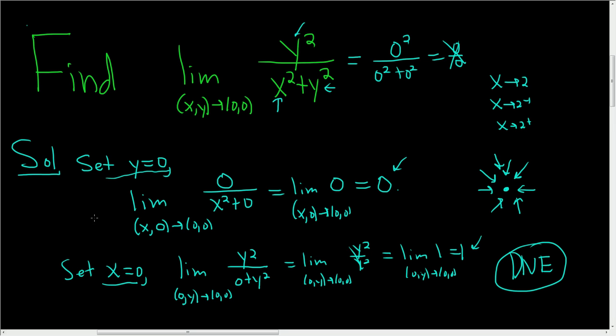And by the way, when we set y equal to 0, that means we're really approaching along the x-axis, right? And when we set x equal to 0, that means we're approaching along the y-axis. So let's use a different color for clarity. In this case, we're coming from this direction, these directions. And in this case, we're coming down these lines. I hope that made sense.